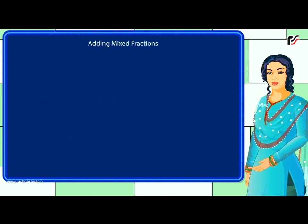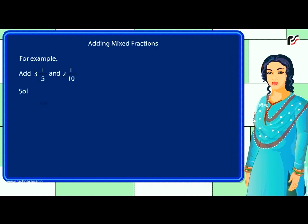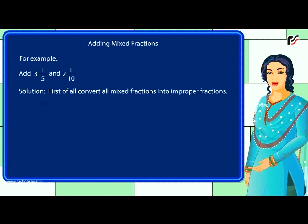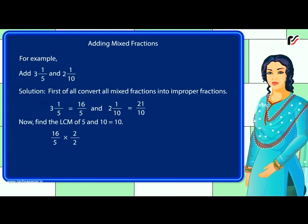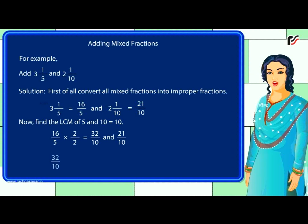Adding mixed fractions. For example, add 3 and 1 by 5 and 2 and 1 by 10. Solution: first convert all mixed fractions into improper fractions. 3 and 1 by 5 equals 16 by 5, and 2 and 1 by 10 equals 21 by 10. Find the LCM of 5 and 10, which equals 10. 16 by 5 becomes 32 by 10. So 32 by 10 plus 21 by 10 equals 53 by 10.